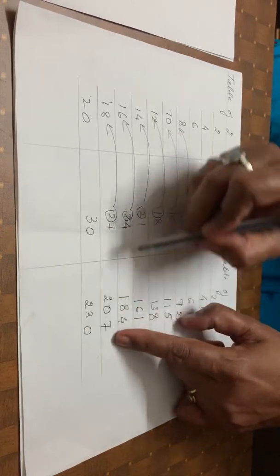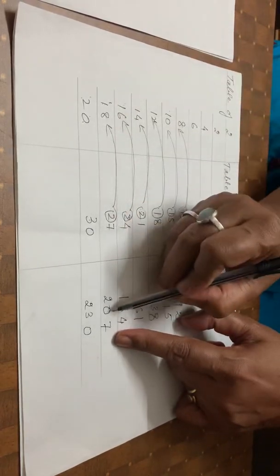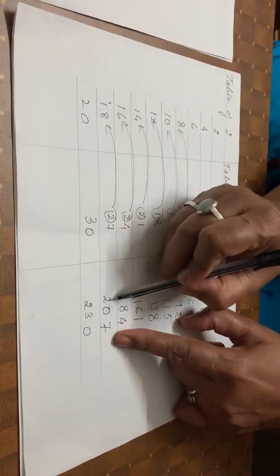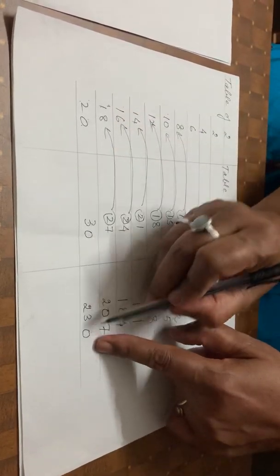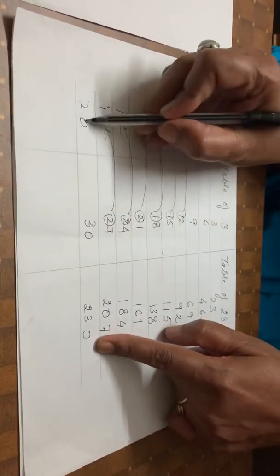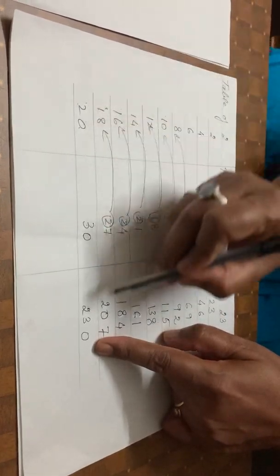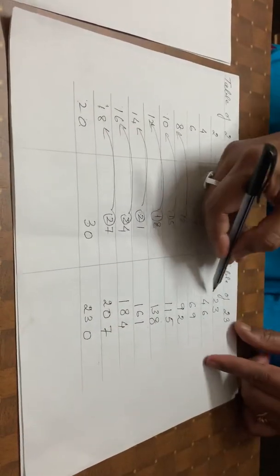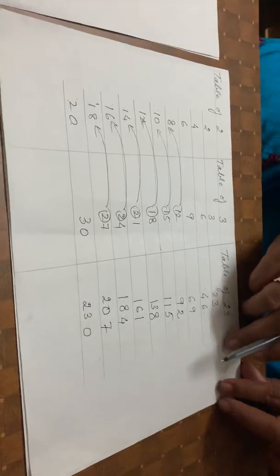Then 7, and 2 plus 8 is 10, so 0 carry 1, and 1 plus 1 is 2, so 207. Then 0, and 3 plus 0 is 3 and 2, so 230. This gives you the complete table of 23.